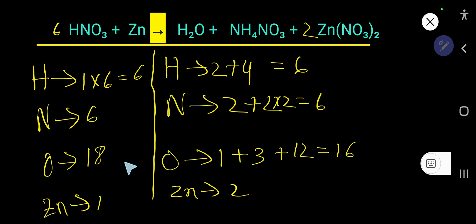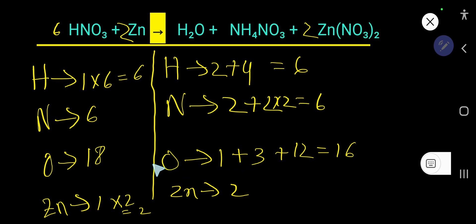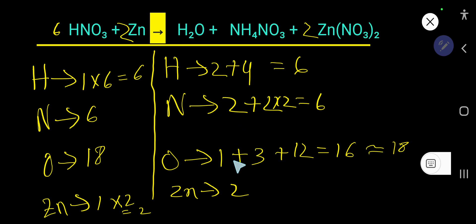Nitrogen is balanced, but oxygen is not: 18 on the left and 16 on the right, so we need to add 2 more oxygen. Before balancing oxygen, let's balance H₂O: 2 on the right and 1 on the left, so multiply by 2 — place coefficient 2 in front of H₂O. For oxygen: 3 oxygen in HNO₃ is in complex form, 12 from Zn(NO₃)₂ also complex, but H₂O oxygen is simple. Multiplying H₂O by 3 gives 3 oxygen, so 3 plus 3 = 6, and 6 plus 12 = 18. Oxygen is now balanced.